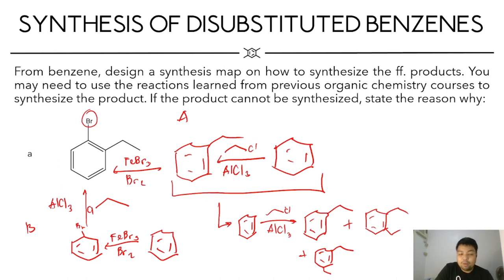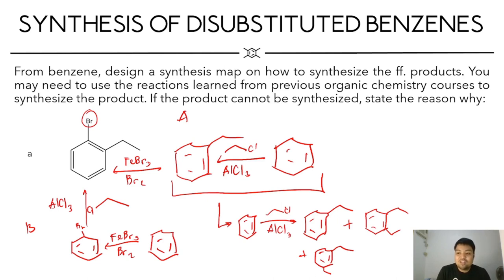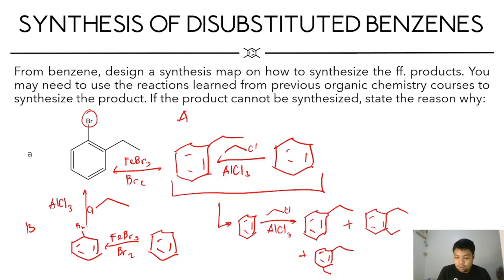You will also form polysubstituted products in Pathway B. This will have problems in your purification and isolation. As much as possible, we would like to design an efficient synthesis such that not only it will reduce the number of steps, but also it will ensure that only one product is produced in each of the steps of the reaction. This will also ensure that the yield of the final product will be maximized.